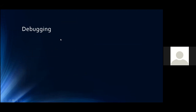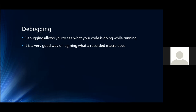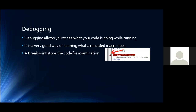The next thing is debugging — this is where we see how our code is working and what the values are. It allows you to see what your code is doing while it's running; you can stop it as it's going and have a look around. It's a really good way of learning what a recorded macro does. A breakpoint stops the code for examination — to set one, click in the gray bar to the left and the line gets highlighted in red, meaning the code will run as far as there and then stop. You can also press F9 or use the Debug menu toggle breakpoint.